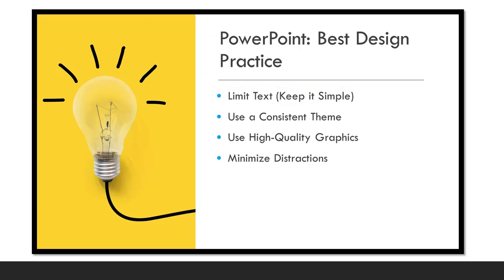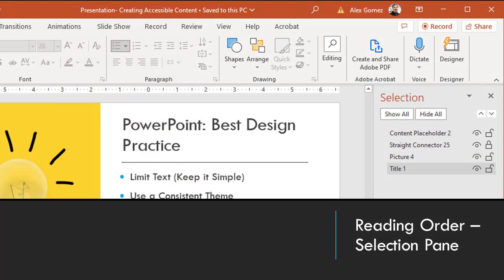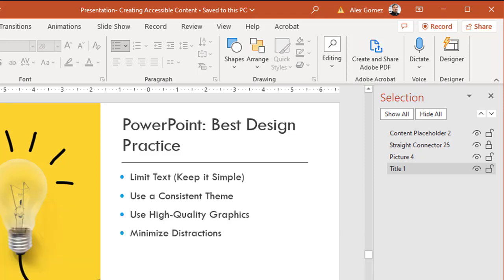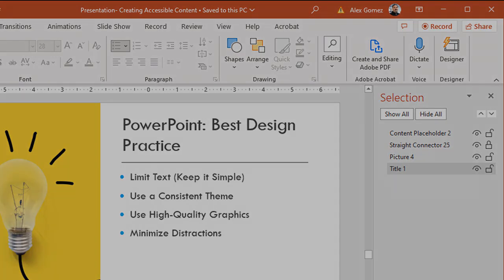If you use a new slide template, you should only need to fix ordering issues if you move or modify the slide. There are two ways to check the reading order. Watch the Setting Reading Order section from the Creating Accessible PowerPoint Presentations video to learn how to use the selection pane. Content in the selection pane is read by screen readers from the bottom up. You can reposition content by dragging it using this tool, or change the reading order by using the accessibility checker tool.